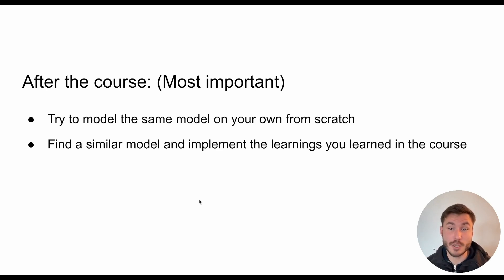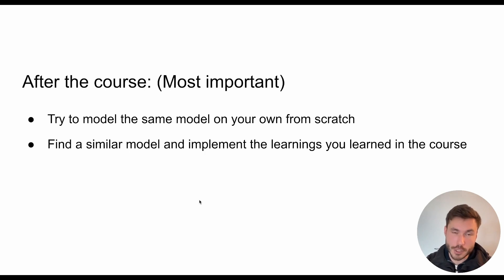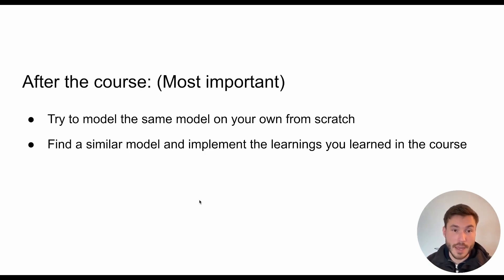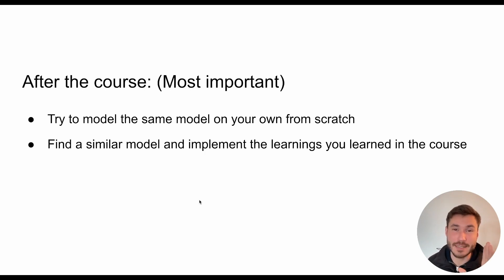And afterwards, find a similar model and implement the learnings from the course. For example — I'm recording this originally for my motorcycle Plasticity course — after the motorcycle, don't jump straight to a weapon or an airplane. Instead, try to find or create another concept that is different from what I showed you, and try to go through the whole process from step zero to the last step on your own. Those people who do that get the results — they become literally 100 times faster and better than people who don't even make it to the end of the course.